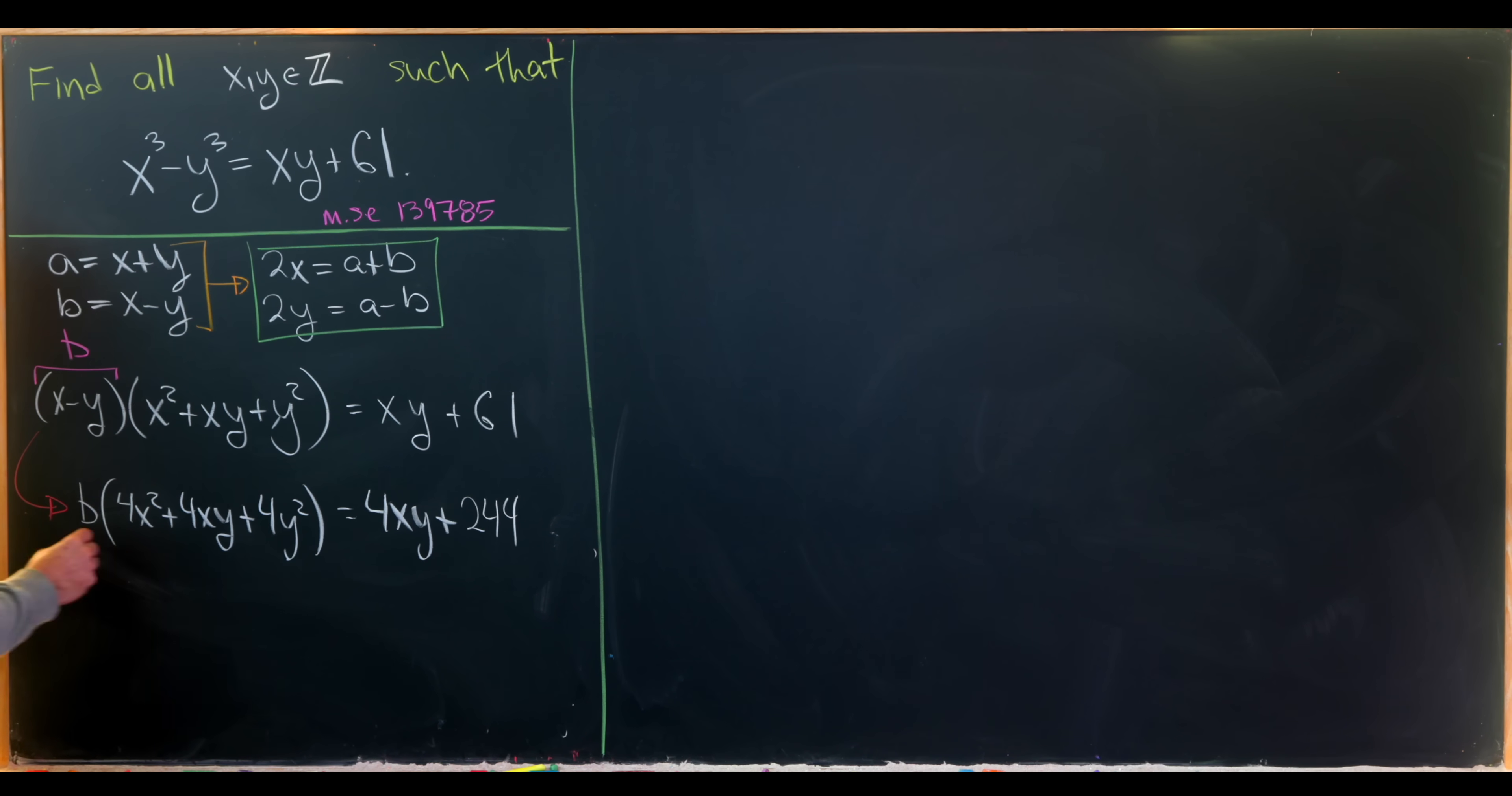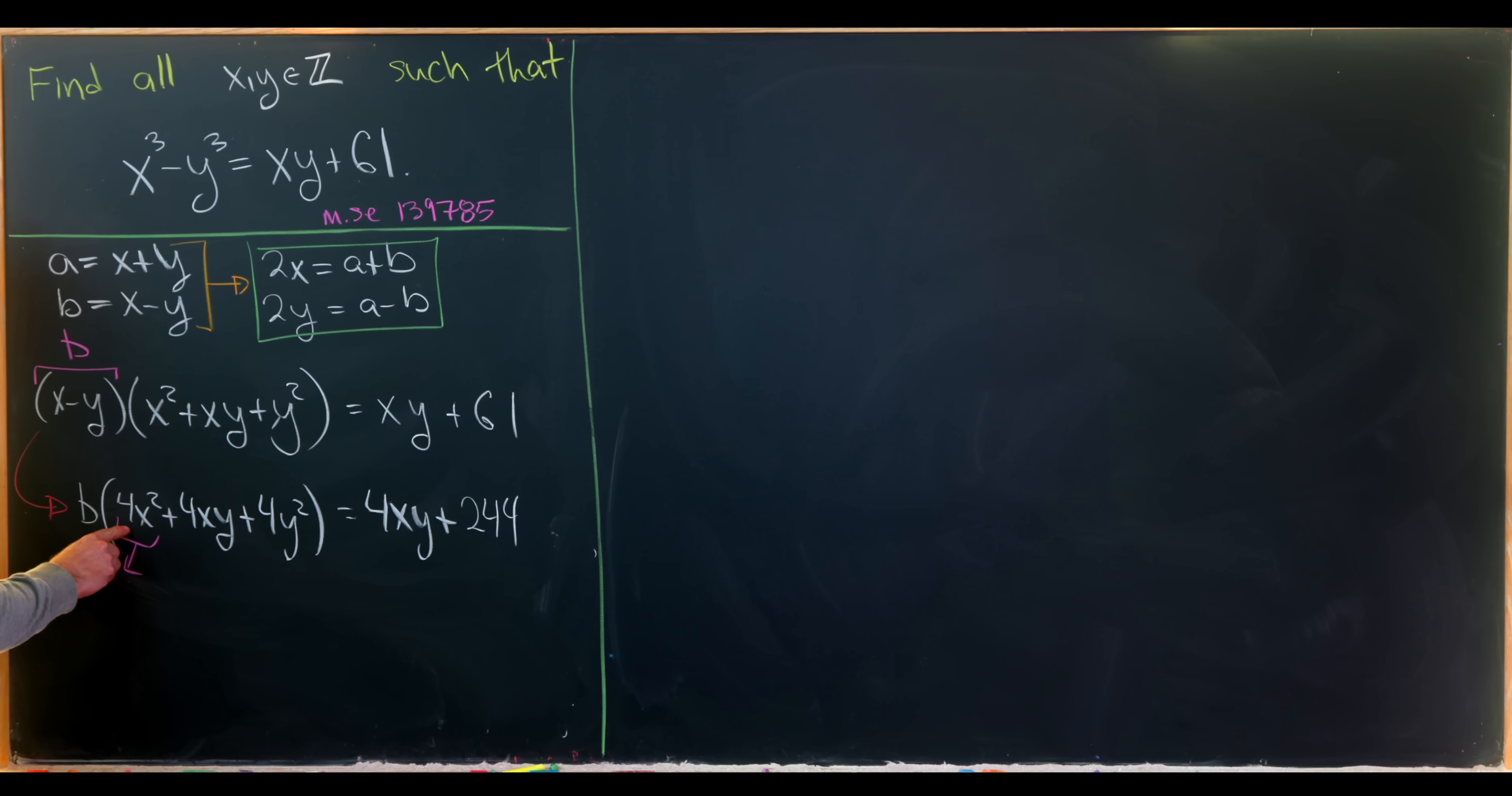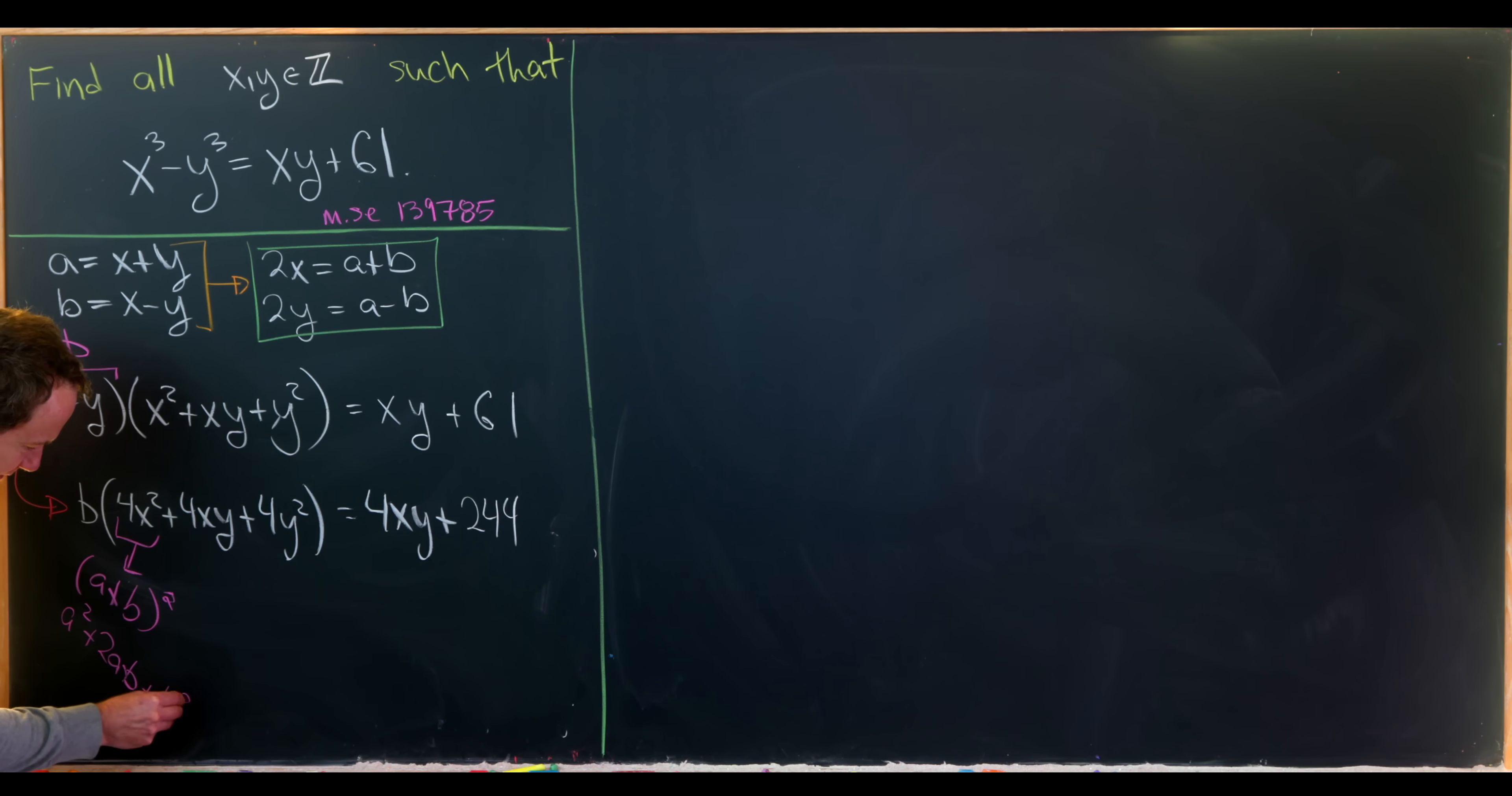Now we'll start doing some simplification. Let's first note that 4x squared equals 2x quantity squared, so that's a plus b squared. That expands to a squared plus 2ab plus b squared. So that's what we get for this 4x squared term.